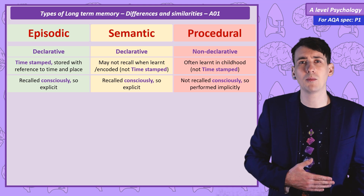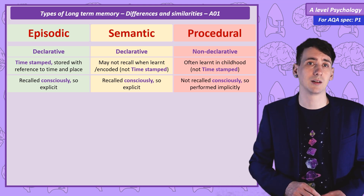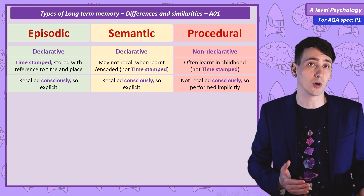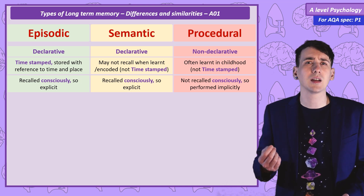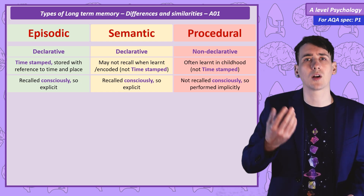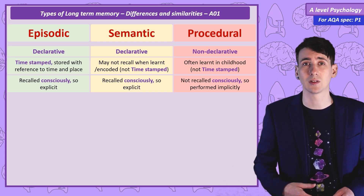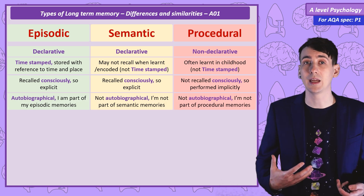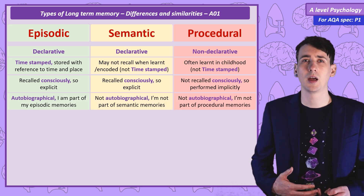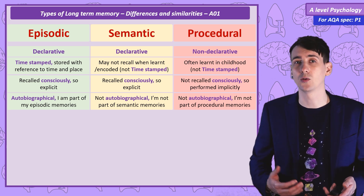Both episodic memories and semantic memories can be recalled consciously — I have a sense of trying to remember something that happened to me, or a fact, and I think and try to bring the information into consciousness. But with procedural memories I can just perform it unconsciously. Episodic memories are autobiographical — they are about me and my life experiences, and when I think about them I am part of the memory. But neither semantic nor procedural memories are autobiographical.